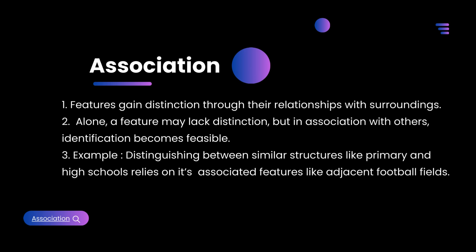Association: features gain distinction through their relationships with surroundings. Alone, a feature may lack distinction, but in association with others, identification becomes feasible. For example, distinguishing between similar structures like primary and high schools close to each other relies on associated features like adjacent football fields.